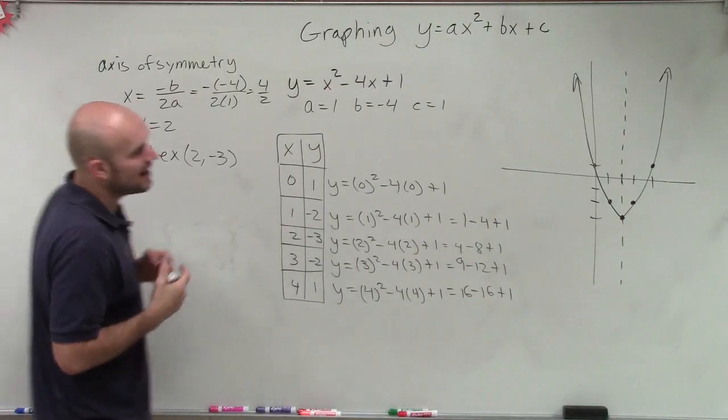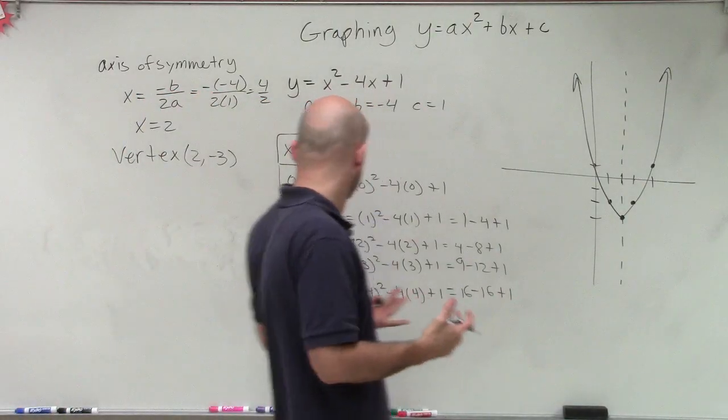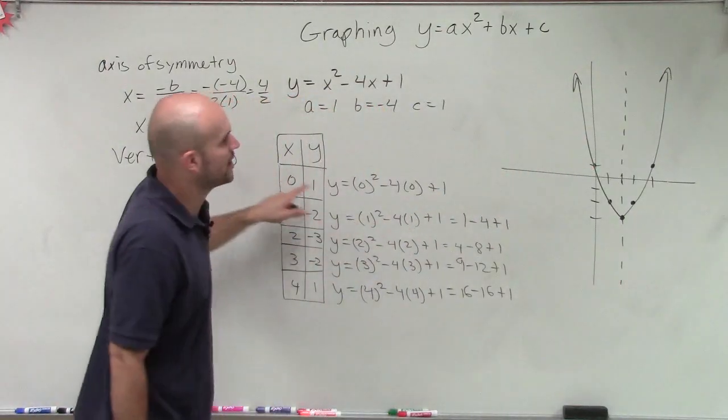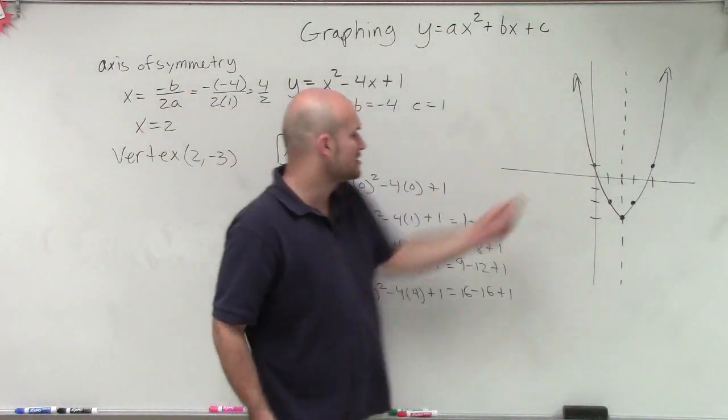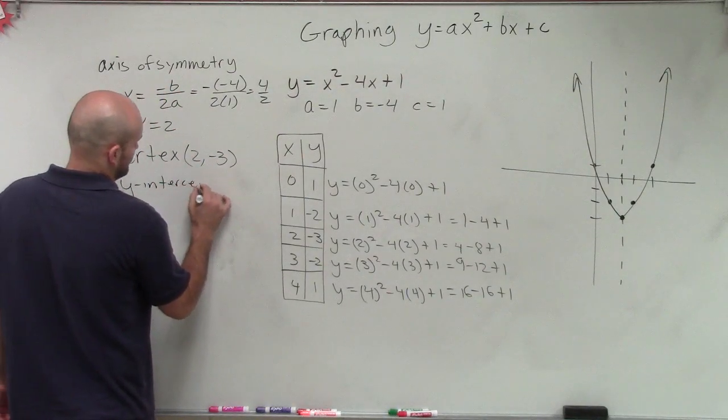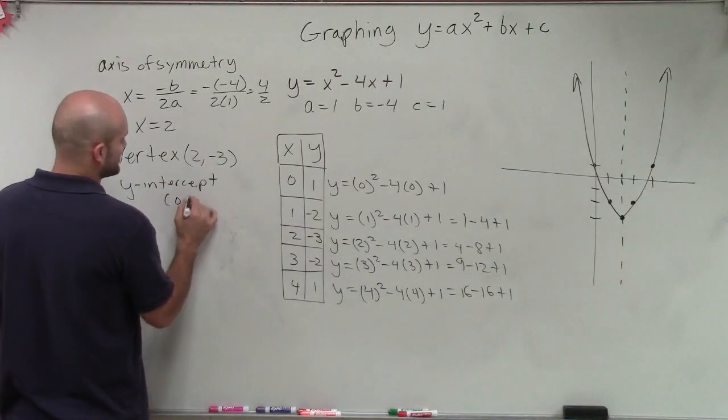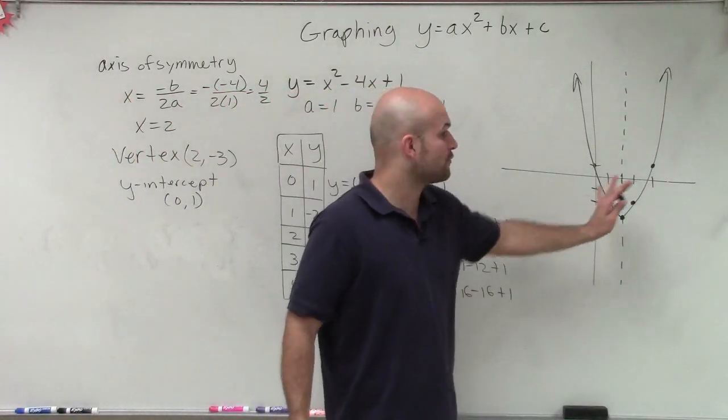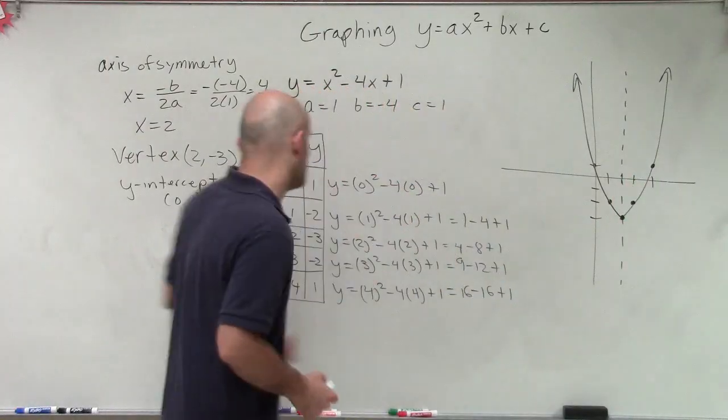Very important. So now we're coming to a couple of conclusions here. We can figure out the y-intercept because that's when our x value is equal to 0. So we know the y-intercept is the point 0 comma 1.